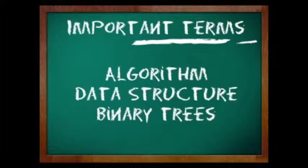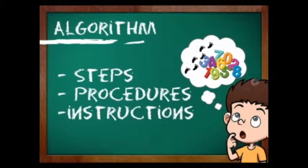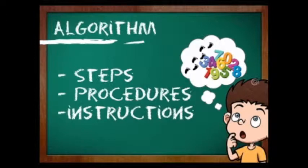First, what is algorithm? Algorithm is a finite set of instructions which, if followed, will accomplish a task. It is like a step-by-step procedure in achieving a specific output.